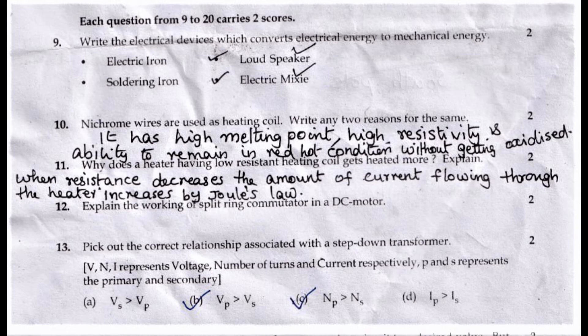Eleventh question: Why does a heater having low resistance heating coil get heated more? Explain. Answer: When resistance decreases, the amount of current flowing through the heater increases. By Joule's law, heat generated increases.